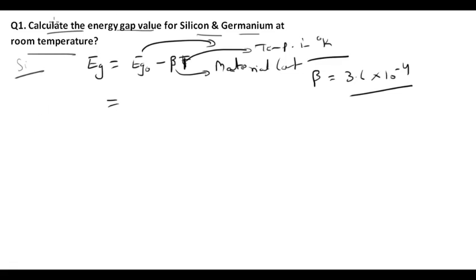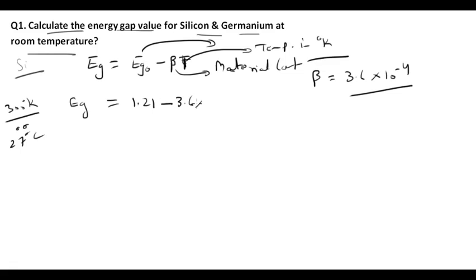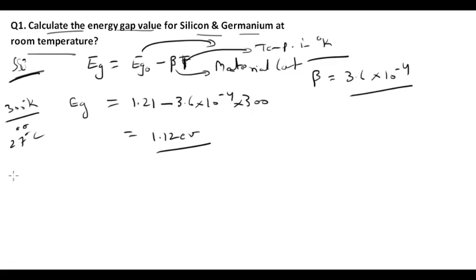We calculate the energy gap at room temperature, which is 300 K (27°C). Therefore, energy gap = Eg₀ − β·T = 1.21 − (3.6 × 10⁻⁴ × 300). On solving, we get 1.12 eV for silicon.